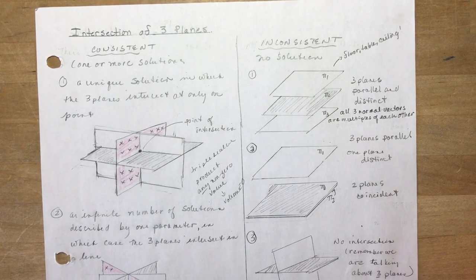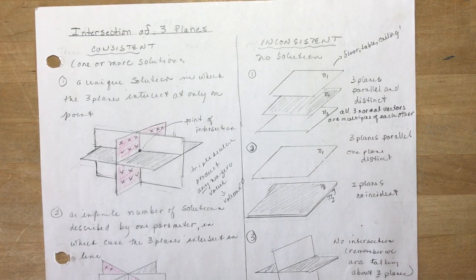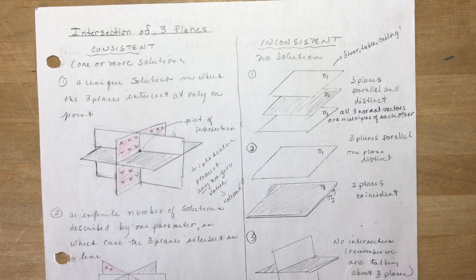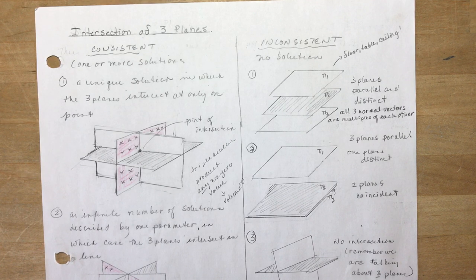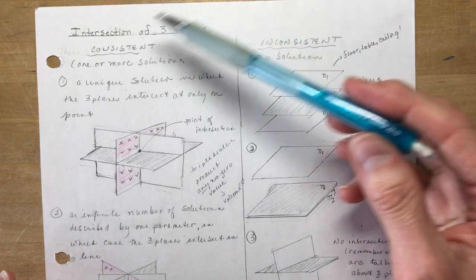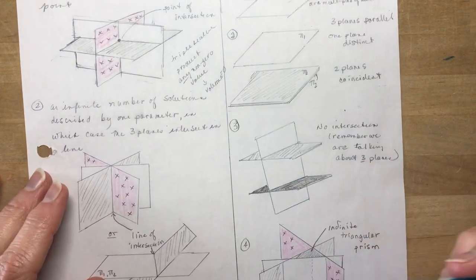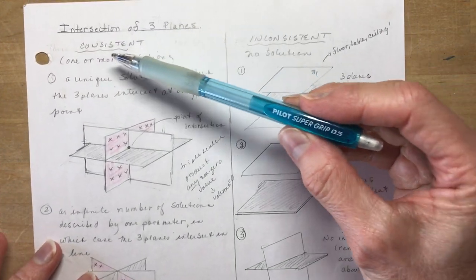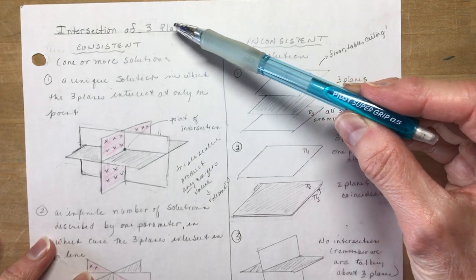Section 9.4 is the intersection of three planes. The plan for this lesson is to go over all the different possibilities that can happen with three planes. I'm going to do two of the examples as well with this first lesson, and then I'll do some more examples in another video. So let's talk about three planes. When we look at this set of diagrams, the lesson is on the intersection of three planes.